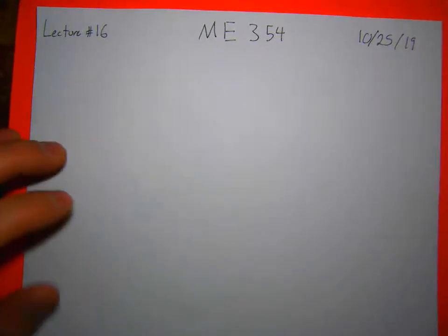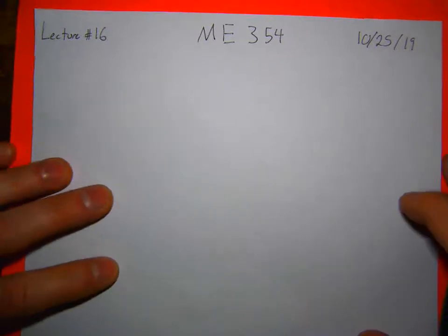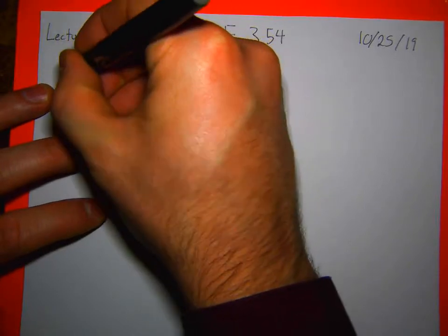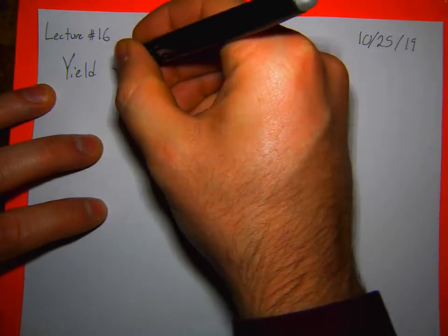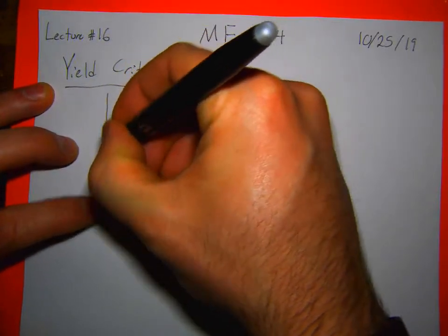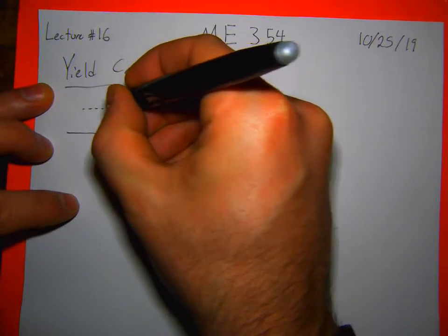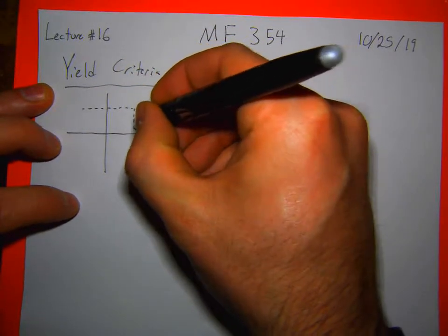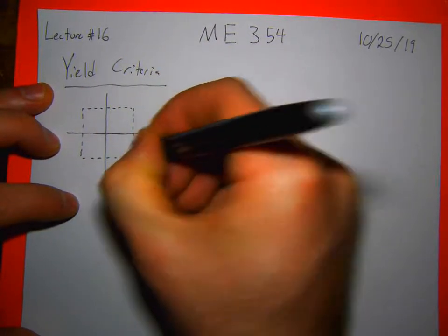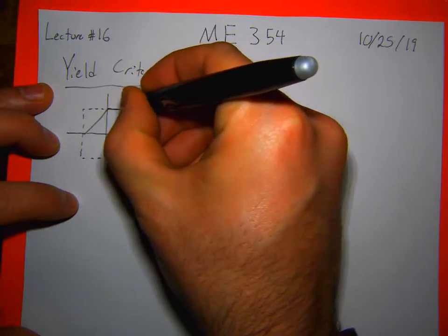Yesterday we talked more about yield surfaces. We had a couple of the main ones you should know: yield criteria. We defined a von Mises, a Tresca, and a max normal surface, which says a material fails at different points depending on what the material is and what the failure criteria is for that.